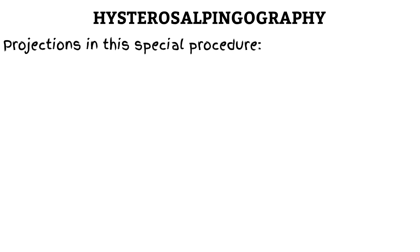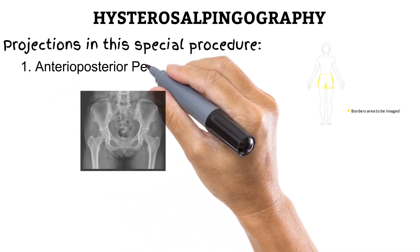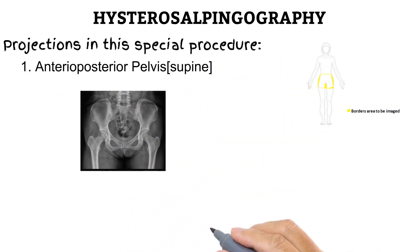That takes us to hysterosalpingography. In this procedure, there is one projection you should be familiar with: the supine anterior-posterior view of the pelvis. Check that you know how to position a patient for this and the direction and centering of the beam. Do you know it? Let's roll!